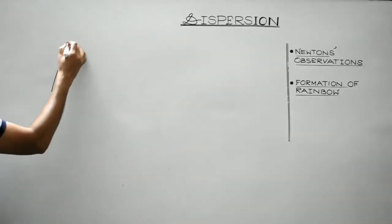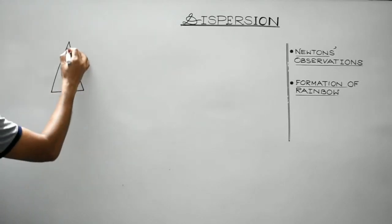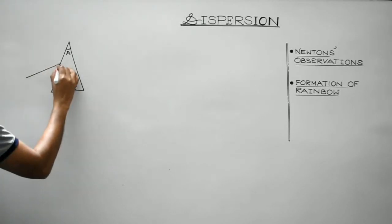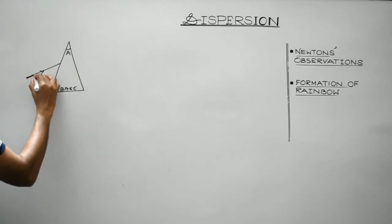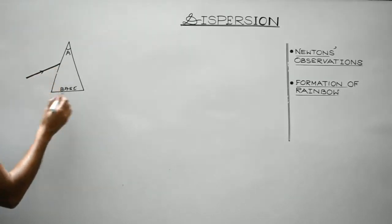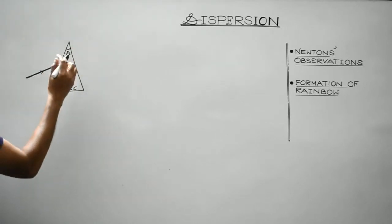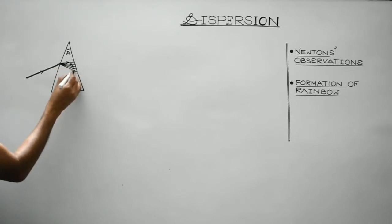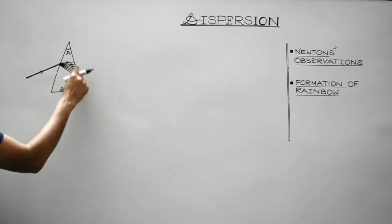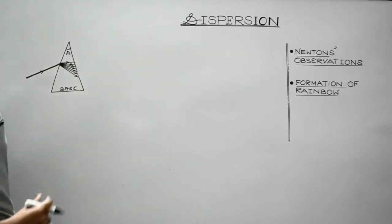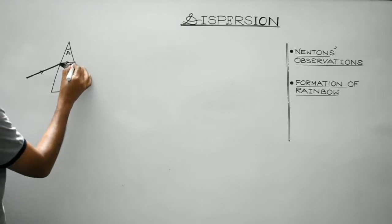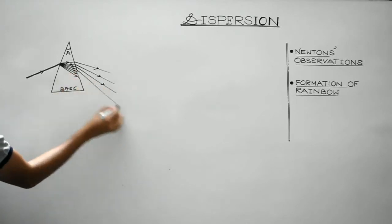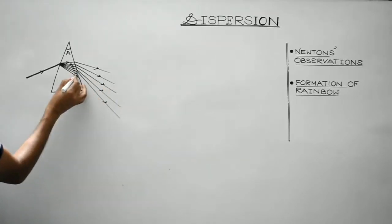Suppose this is a prism — this is the angular prism and this is the base of the prism. If white light is inserted here, white light is composed of 7 constituent colours. It will suffer refraction from rare to denser medium and bend towards the normal. The rays then travel from denser to rare and bend away from the normal. Because of different wavelengths, the glass prism offers different refractive indices to different wavelengths, and they get deviated through different amounts.